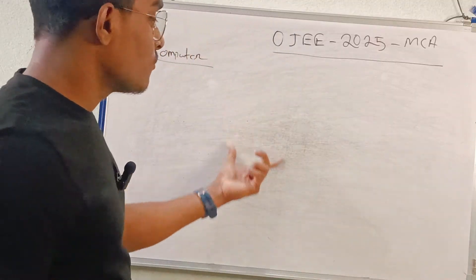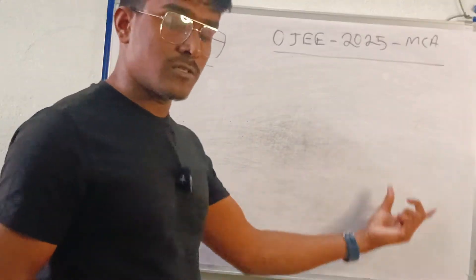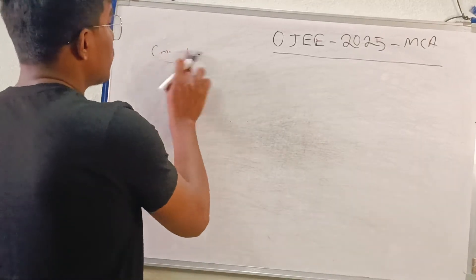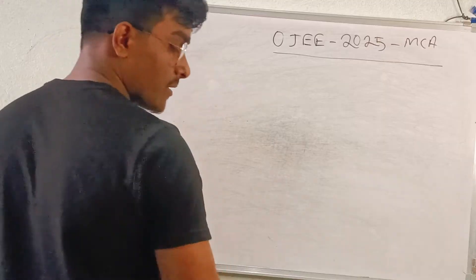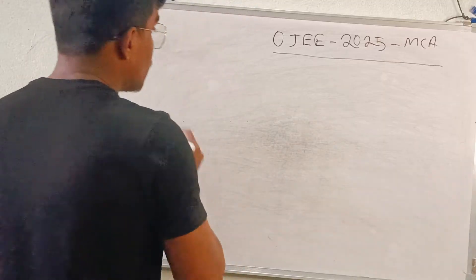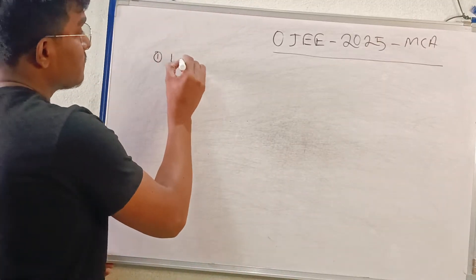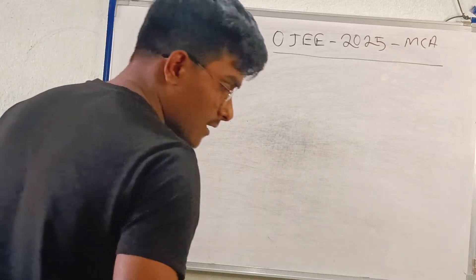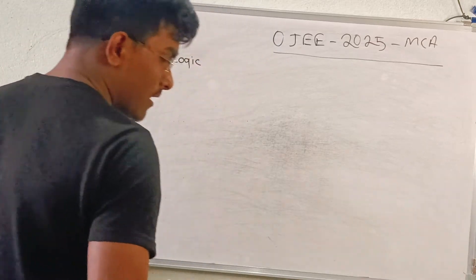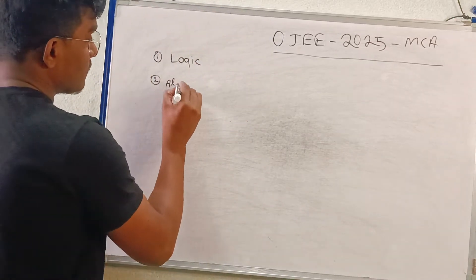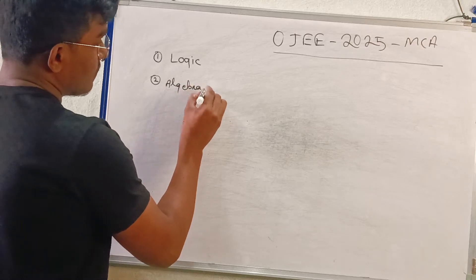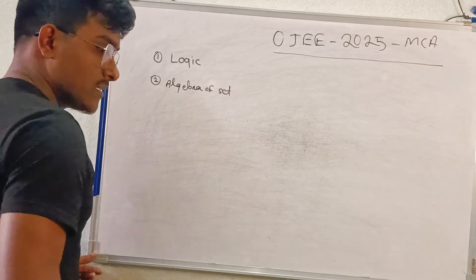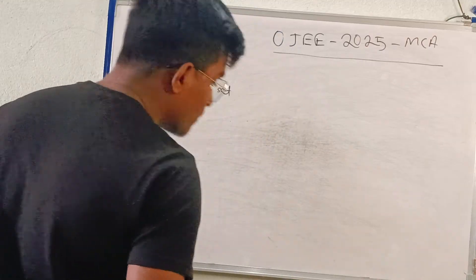In mathematics, I will tell you about the total chapters and the importance code. So first, I will tell you about Logic. Second, Algebra of Sets. Third, Number System.